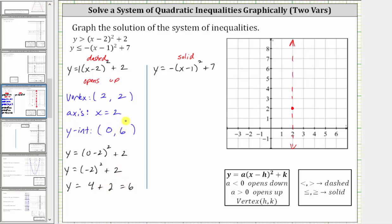Therefore, the vertical intercept is the ordered pair zero comma six. Let's plot this on the coordinate plane. Zero comma six is here. But because we have the axis of symmetry, we know there's a corresponding point on the right side. Since this vertical intercept is two units to the left of the axis of symmetry, there's a corresponding point two units to the right of the axis of symmetry. So by having these three points, we can now make an accurate graph of the first quadratic function. But remember, it is going to be a dashed parabola. Let's go ahead and graph the parabola, which looks something like this.